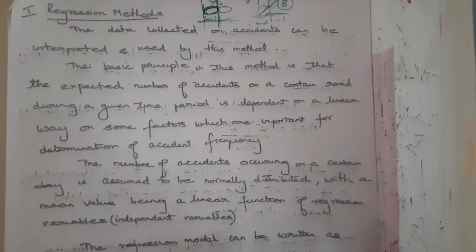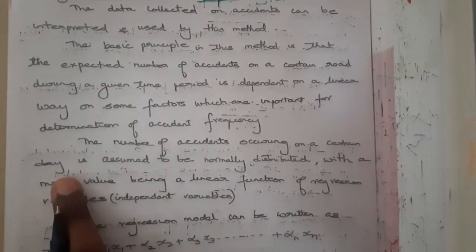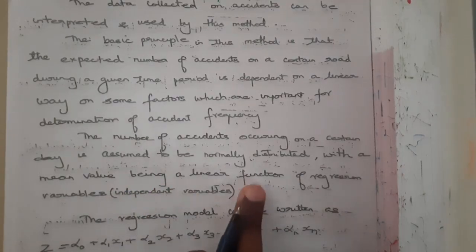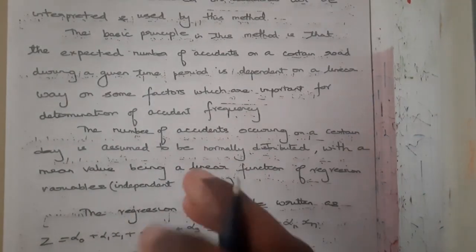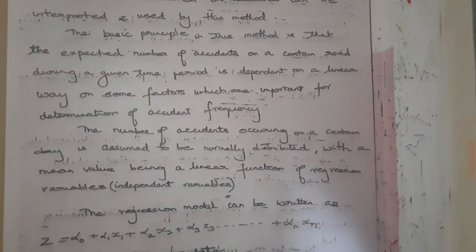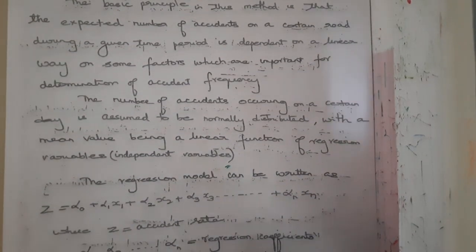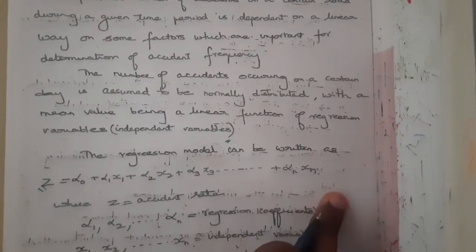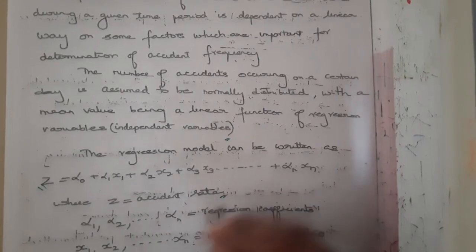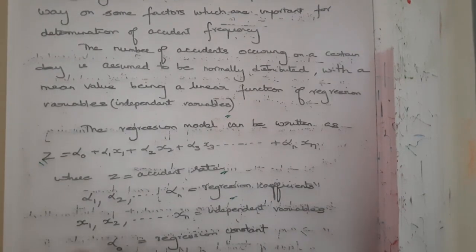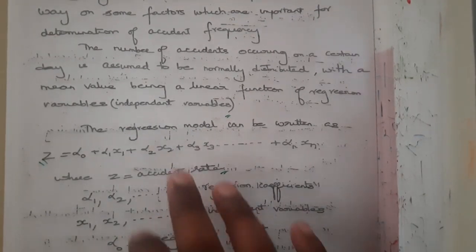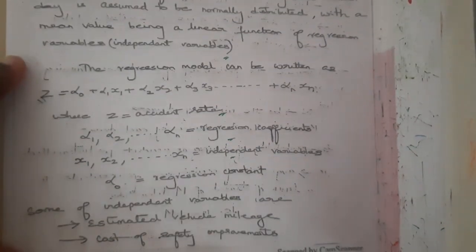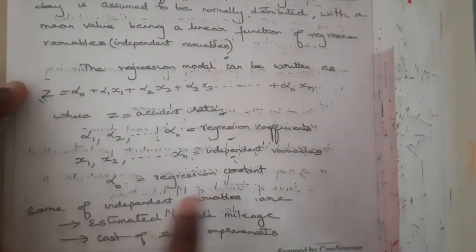The number of accidents occurring on a certain day is assumed to be normally distributed with a mean value being a linear function of regression variables. The basic formula is: Z = α₀ + α₁X₁ + α₂X₂ + ... + αₙXₙ, where Z is the accident rate, α are the regression coefficients, and X₁, X₂ are the independent variables.